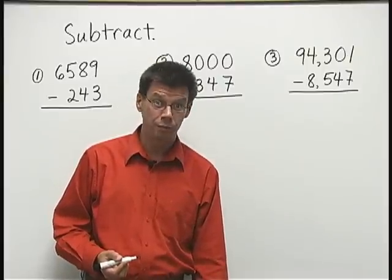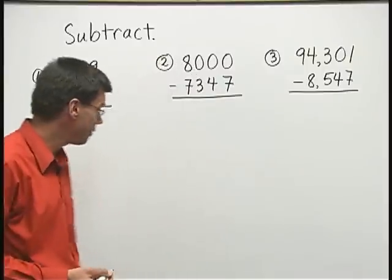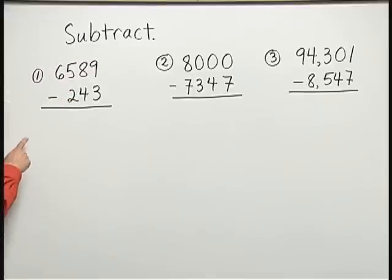Let's do a few subtraction problems. For our first one, number one, we'll take 6589 minus 243.